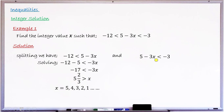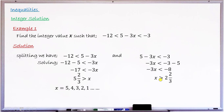Moving to the second simple inequality: 5 minus 3x less than minus 3. Collecting like terms, minus 3x less than minus 3 minus 5, giving minus 3x less than minus 8. Dividing both sides by negative 3, the sign reverses to give x greater than 2 and 2 over 3.